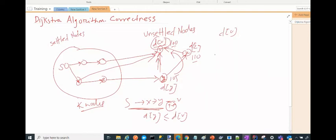And now you see, if we take alternate path—if we see that D(Y)—you see here D(Y) is less than or equal to D(V).